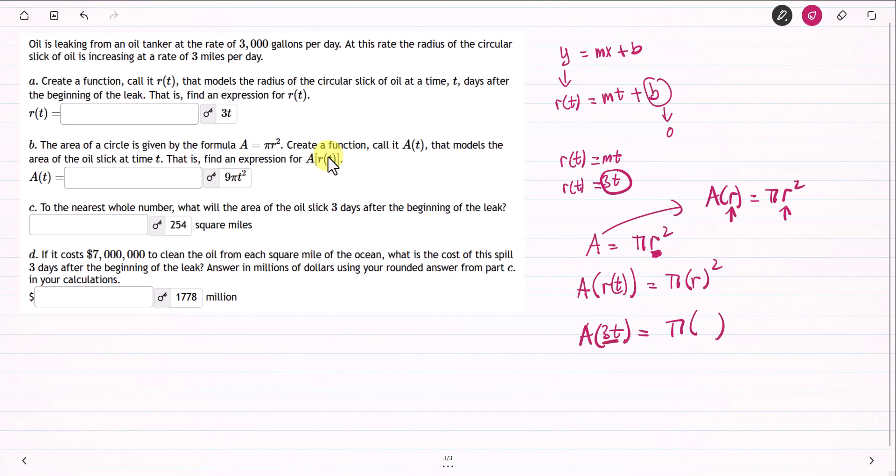From your original equation, this is the radius. You can rewrite this as A of r equals pi r squared. This is your old input. Now we have the new input, 3t. So 3t will go to the place of r.